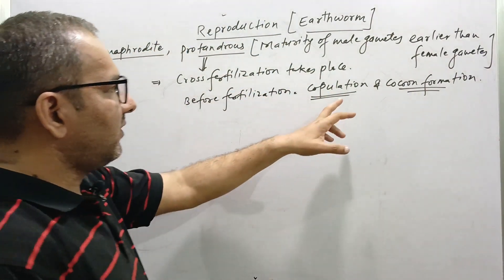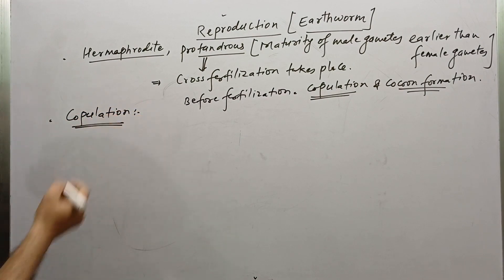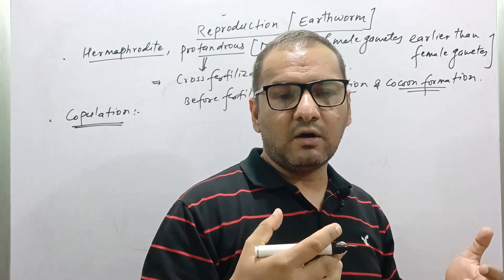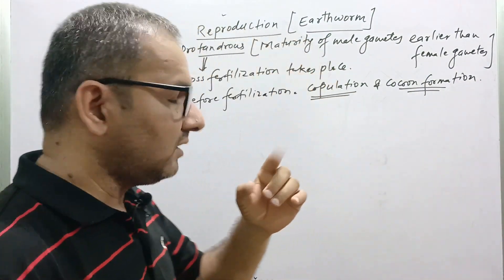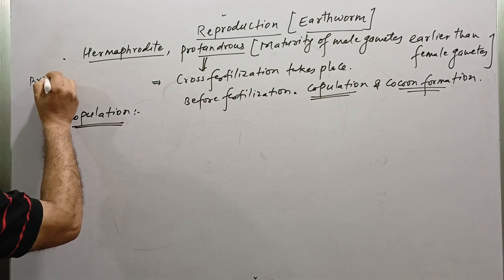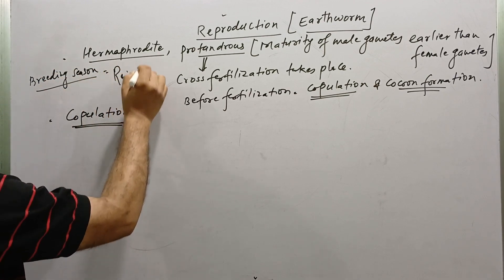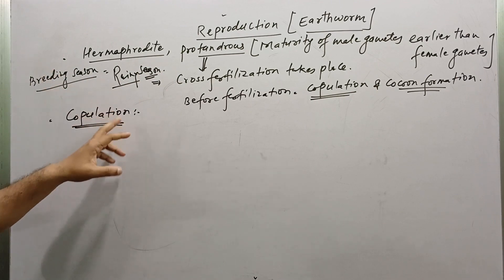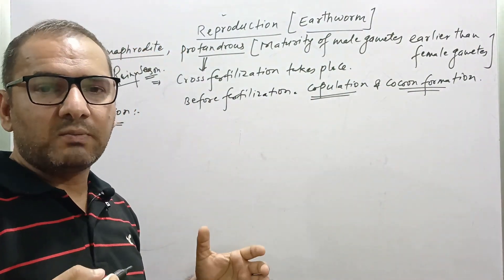The first process is copulation. Copulation is a process in which exchange of male gametes takes place between two copulating earthworms. The breeding season of earthworm is the rainy season. During the breeding season, earthworms first undergo the process of copulation.